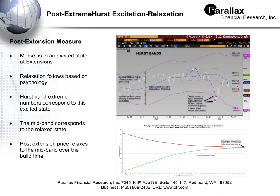For bottom extensions, they move back up to the midline — the blue equilibrium line — over the time it took to build the bottom. The x-axis is 100% of the time it took to build the signal. In that amount of time, it runs back to equilibrium. That's where the market wants to go. When it gets perturbed and excited, it can't stay that way; it tends to come back and be at rest, in an equilibrium state.